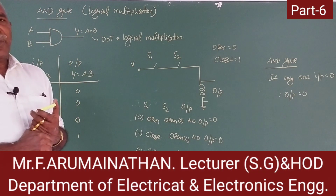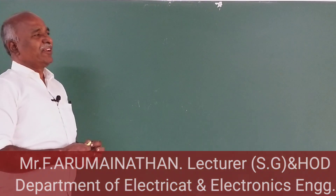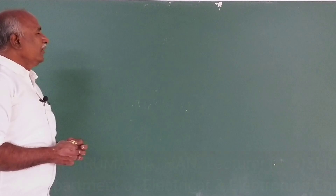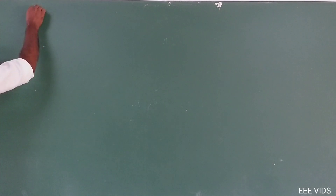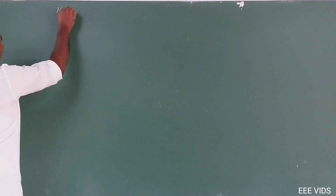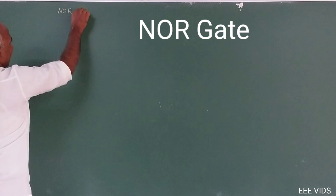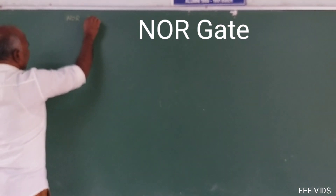Let's see about combinational gates. So, first combinational gate. For example, first gate — NOR gate. So, NOR gate.